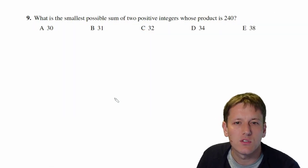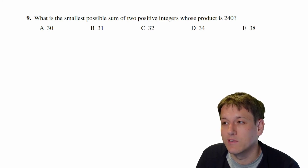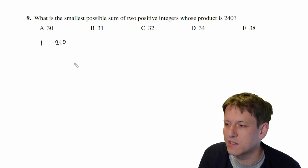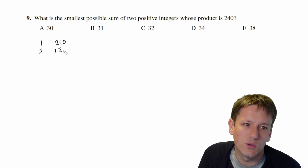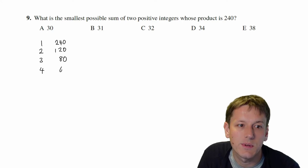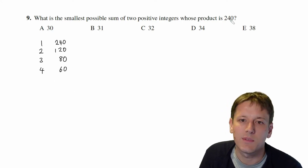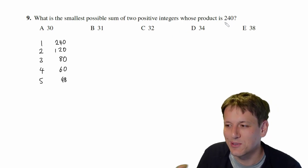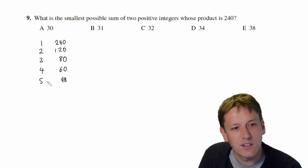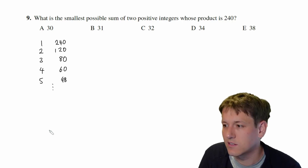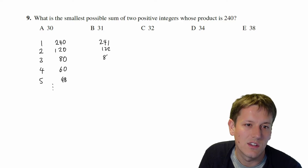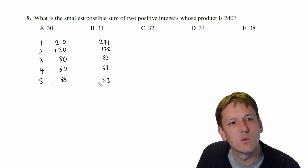Question 9: what is the smallest possible sum of two positive integers whose product is 240? We need to think about factor pairs of 240. Writing them down systematically: 1 and 240 (sum 241), 2 and 120 (sum 122), 3 and 80 (sum 83), 4 and 60 (sum 64), 5 and 48 (sum 53), 6 and 40 (sum 46). The sums are getting smaller as the factors get closer together.